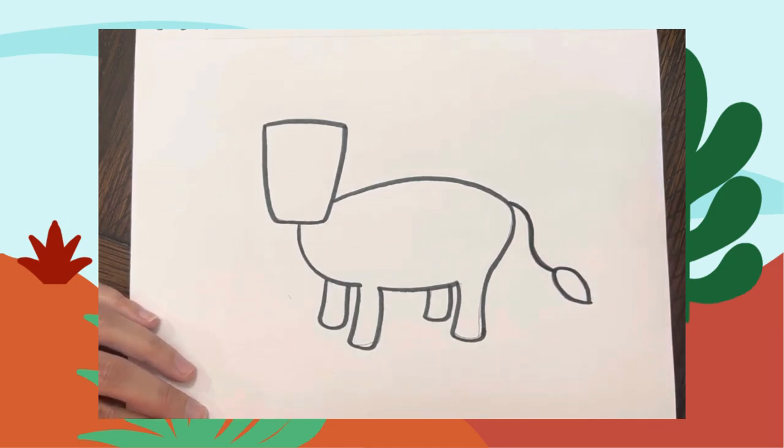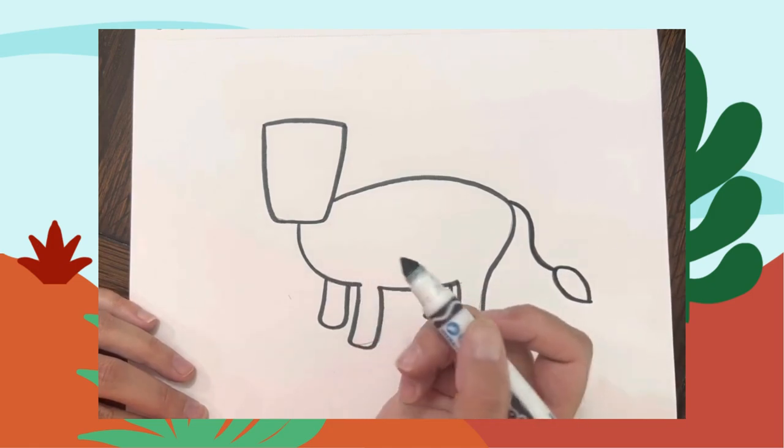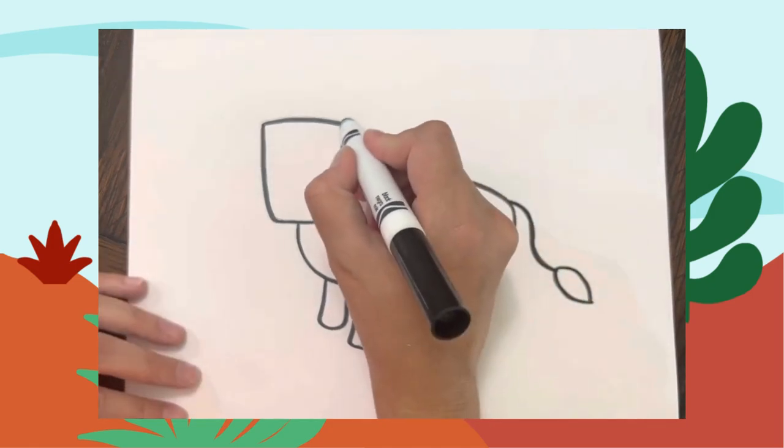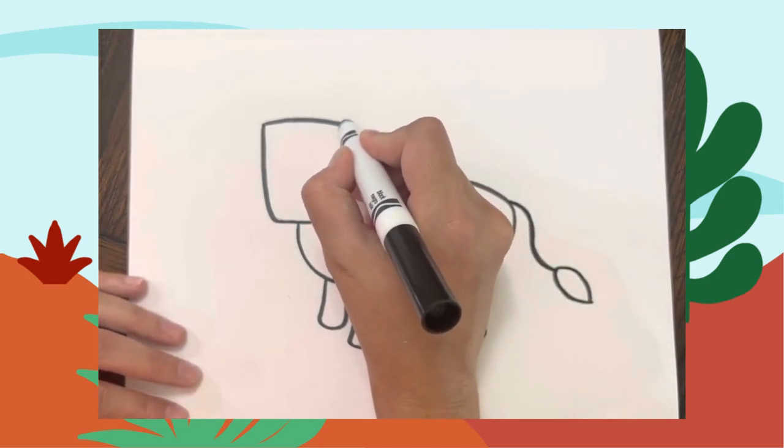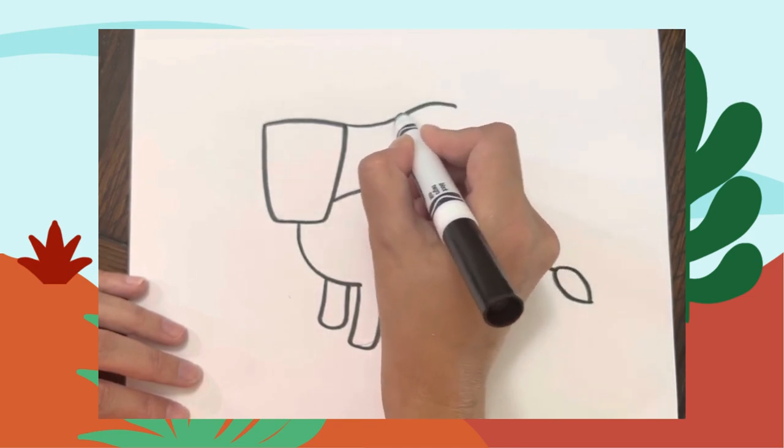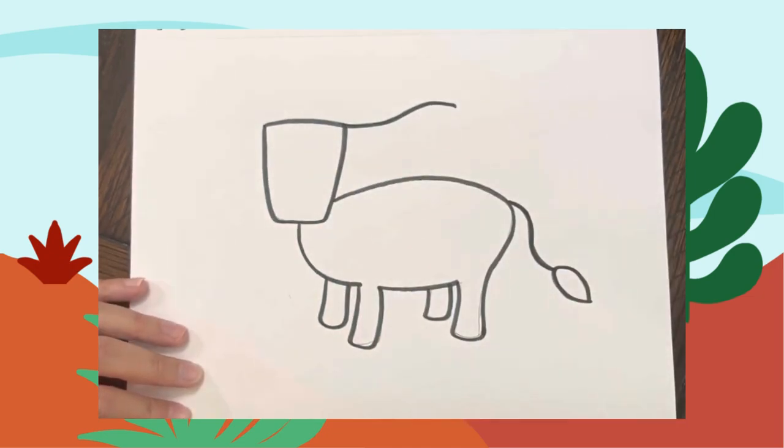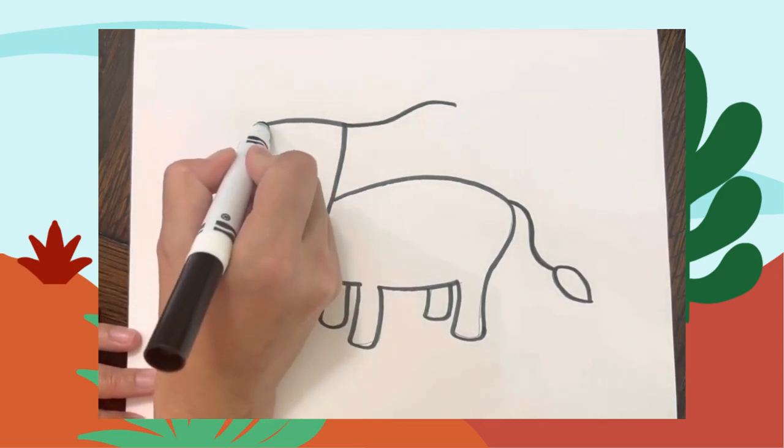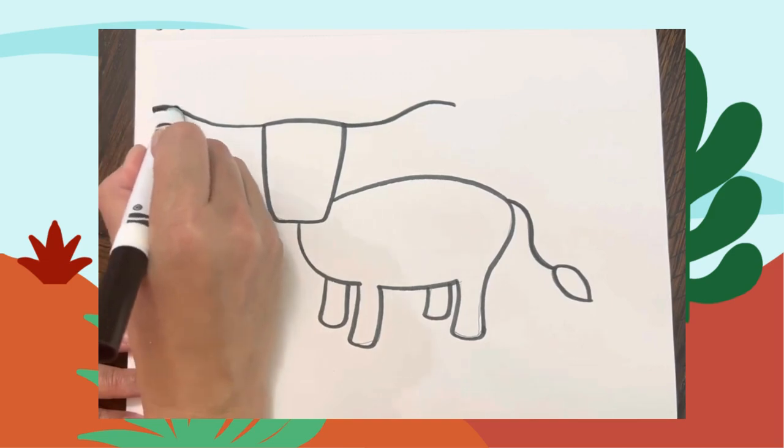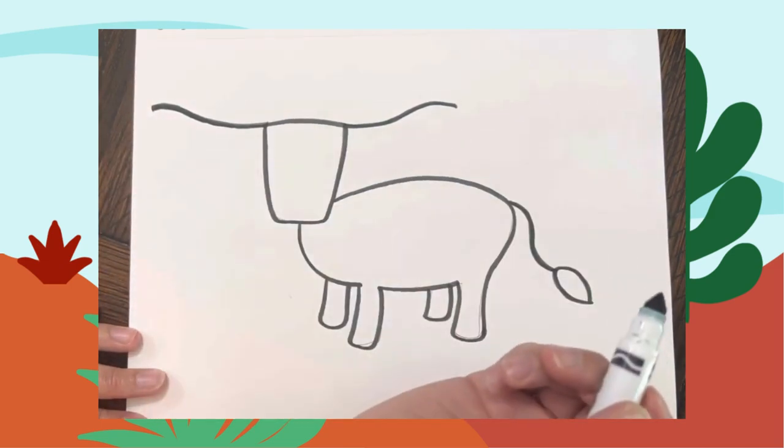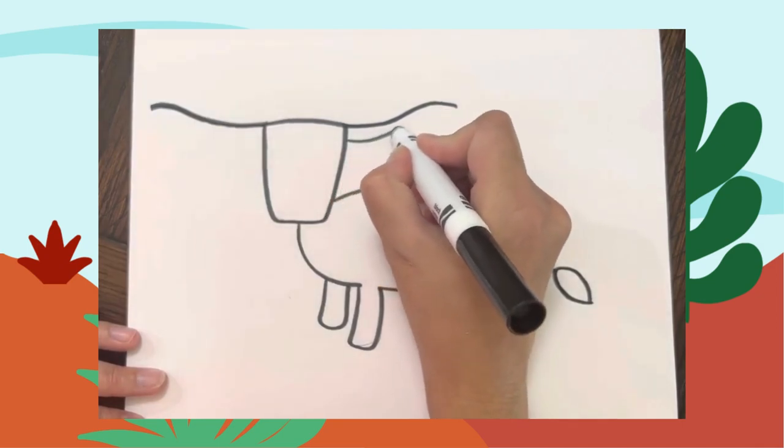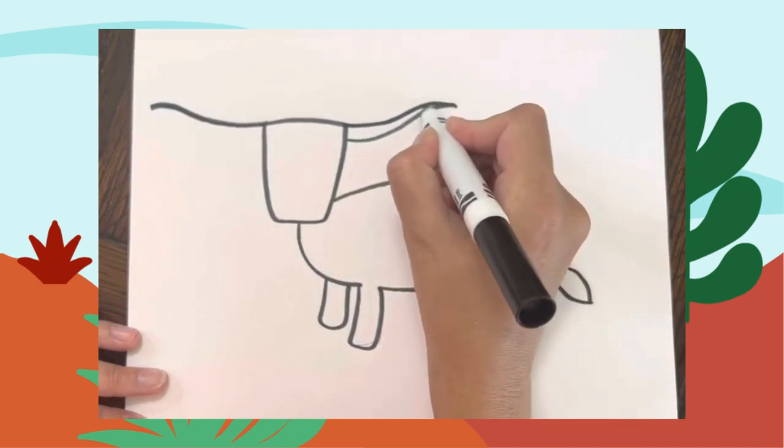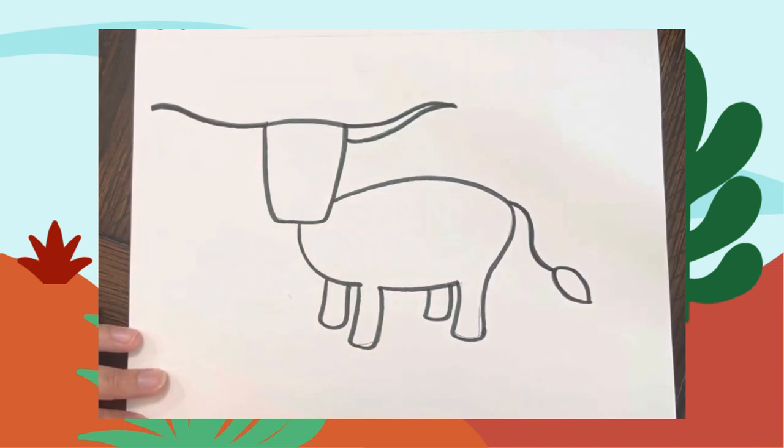All right, let's do his horns. On each side of his head, we're going to make a long line going up at the end. Same thing on the other side. And then we'll come down on the sides of his head, follow that line, and connect it at the end. Same thing on the other side.